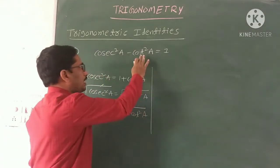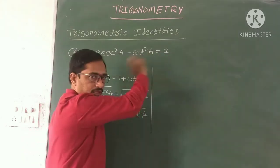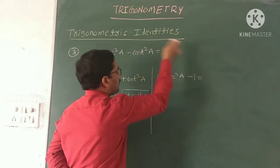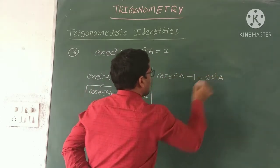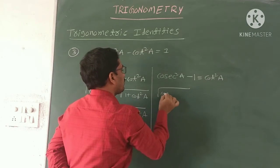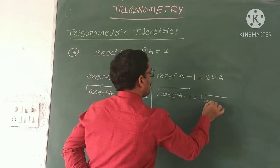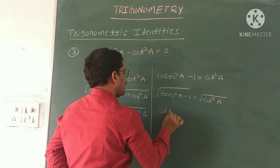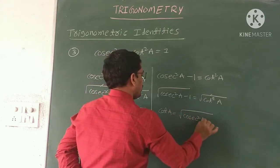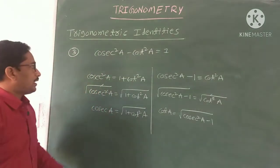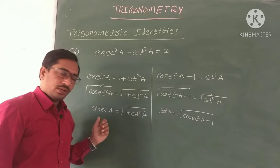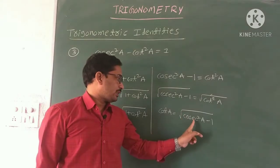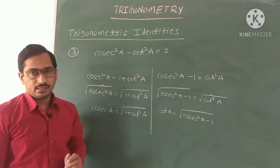Now express cot in terms of cosec. Interchanging cot²A and 1: cosec²A - 1 = cot²A. Applying square root on both sides: cot A = √(cosec²A - 1). So from the third identity cosec²A - cot²A = 1, we get cosec A = √(1 + cot²A) and cot A = √(cosec²A - 1). These are the three important identities of trigonometry.